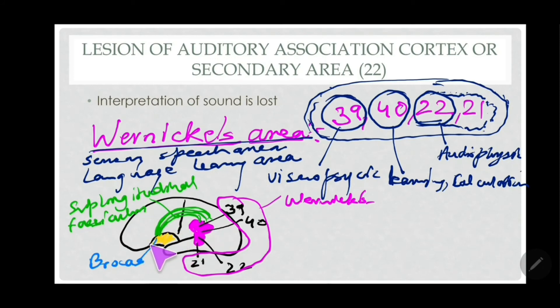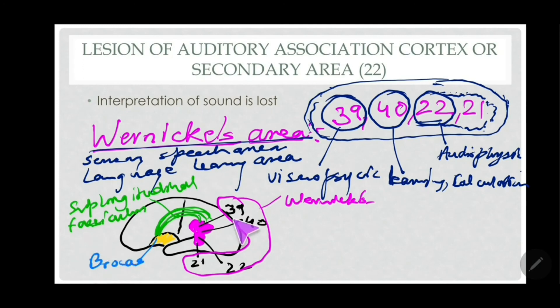Although Broca's area is helping you to speak as the motor speech area — bringing out your accent and vocabulary through movement of the lips, tongue, pharynx, and soft palate — if Wernicke's is not working, you will start speaking but what you are speaking, you yourself don't know, and the other person will not be able to comprehend what you are saying. That is called jargon aphasia.